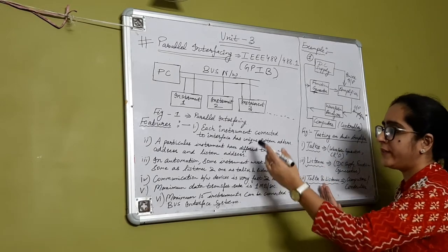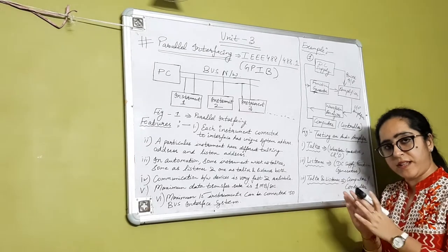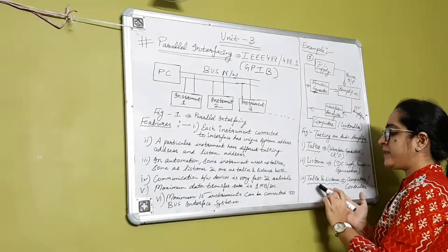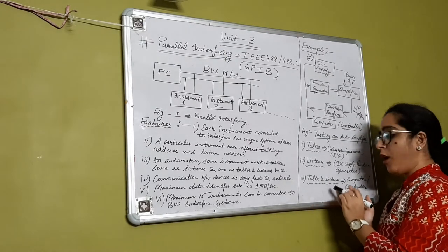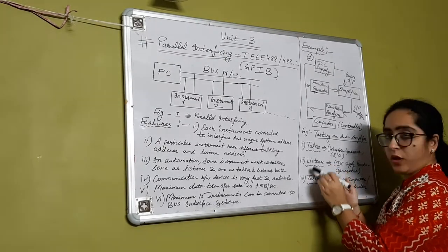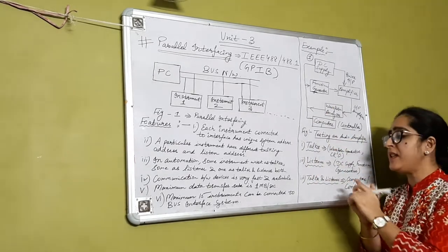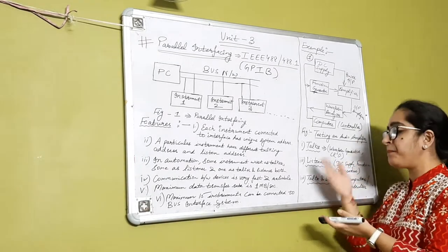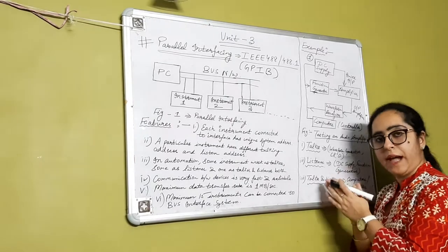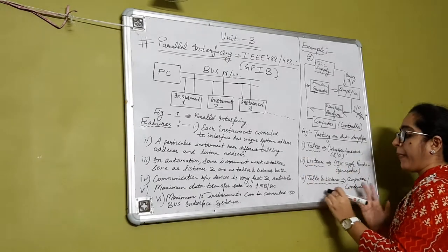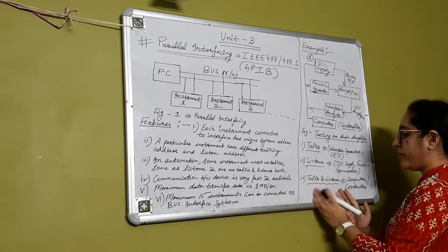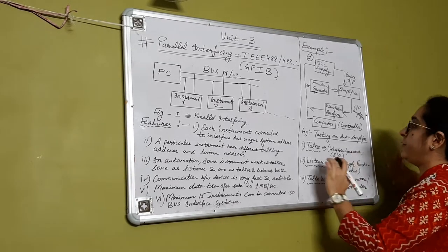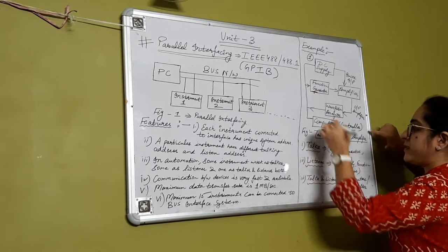All devices have their system address as their talking address as well as their listening address. When they switch from talker to listener or vice versa, the listening address deactivates and the talker address activates, or the other way around. The device that can act as both talker and listener at the same time is the computer or controller, which manages the flow of information.